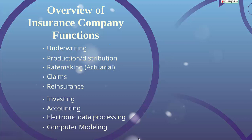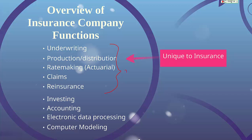These first five things — underwriting, production and distribution, rate-making and claims, and reinsurance — are all unique to insurance and part of the core functions. While other companies underwrite and certainly engage in marketing or production, the way it's done in insurance is very unique. Rate-making is really just pricing, and claims is highly unique to the insurance business, as well as reinsurance.